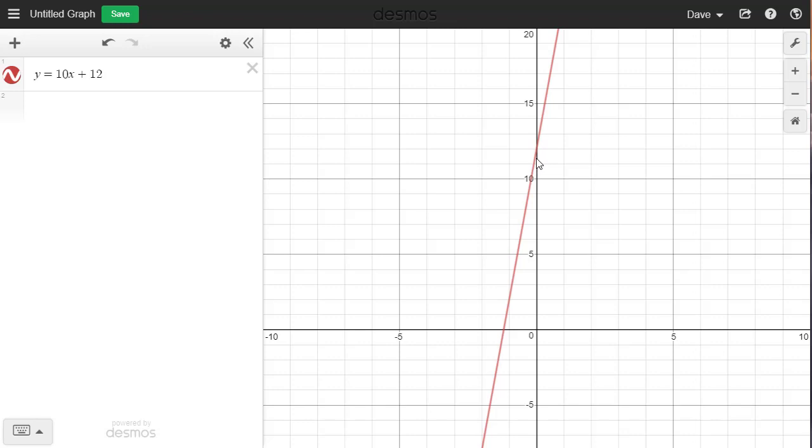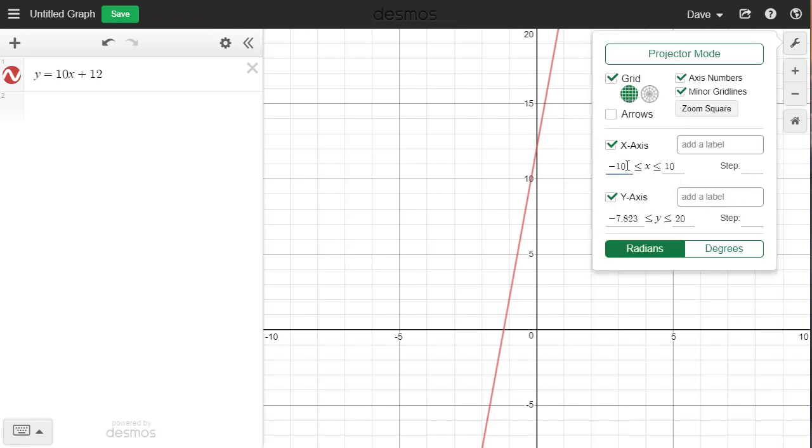Now perhaps I don't want my horizontal window to be from negative 10 to 10. I can change that. I'm going to try negative 5 to 5.